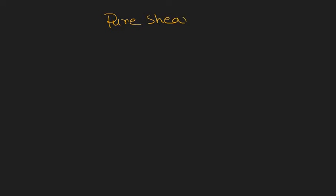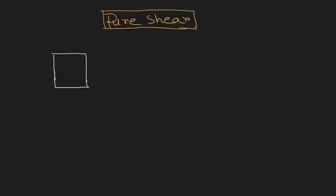To understand pure shear we need to consider a system which is under the action of biaxial stress, but the stress here is quite special. We will apply biaxial stress: in the x-direction let's say this is sigma and it is tensile, so it is positive. But along the y-axis we will apply compressive stress, and the magnitude is sigma but it is negative in nature.